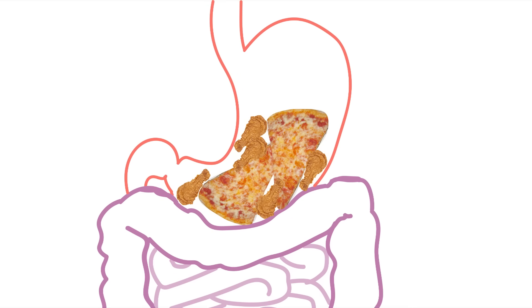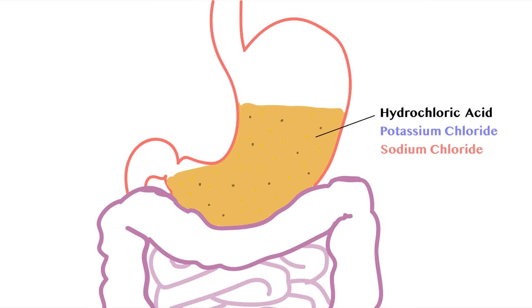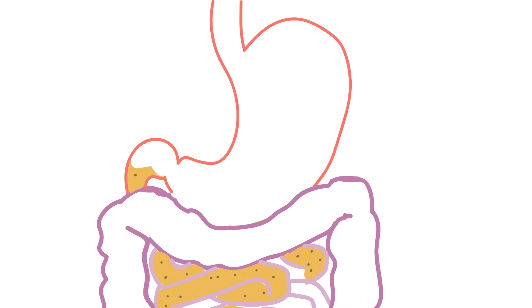While digesting, the parietal cells in the stomach lumen release gastric acid composed of hydrochloric acid, potassium chloride, and sodium chloride. Normally, this is a harmless process. Gastric acid is released, food is broken down, and is then sent to the small intestine. No problem.